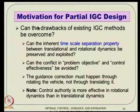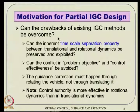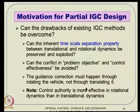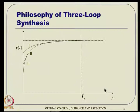The motivation for partial IGC is to retain the benefits of IGC while overcoming its drawbacks. The questions are: can the inherent time-scale separation property between translational and rotational dynamics be preserved and exploited? And can the conflict between problem objective and control effectiveness be avoided? The guidance correction must happen through the rotation of the vehicle, not through translation — control authority is more effective in rotational dynamics than translational dynamics.